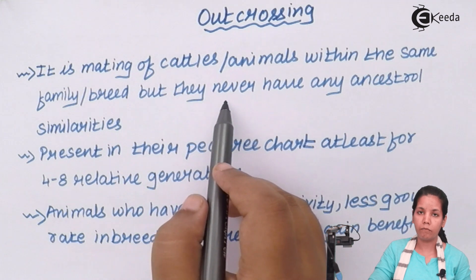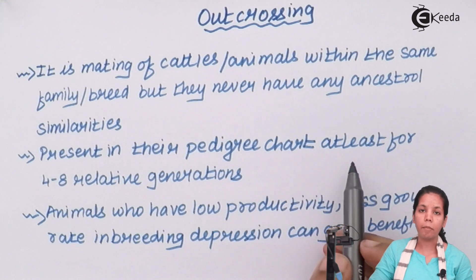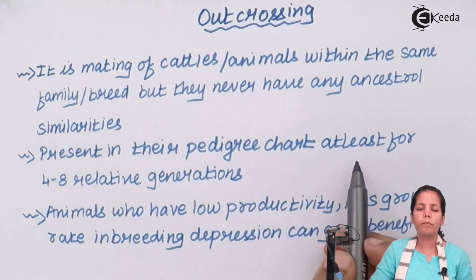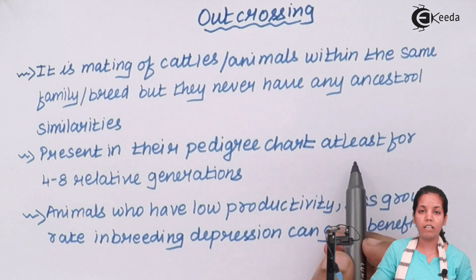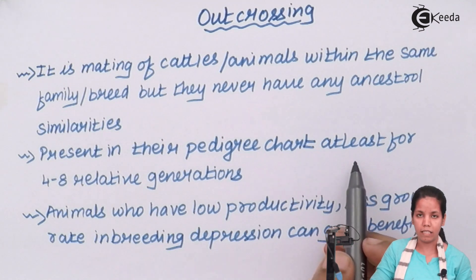Ancestral similarities within at least four to eight generations are never taken into consideration. A pedigree chart or generation chart is made and there should be no relation between the species used in mating for that number of generations. The reason is that certain dominant characteristics passed down from generation to generation could have a harmful effect on milk production, so this step is carefully managed.